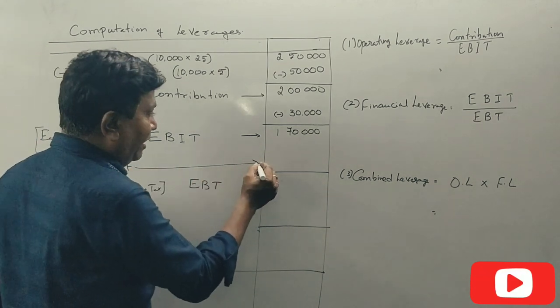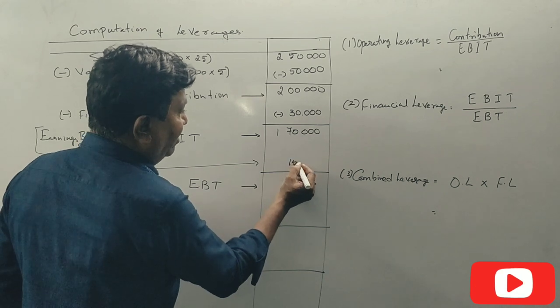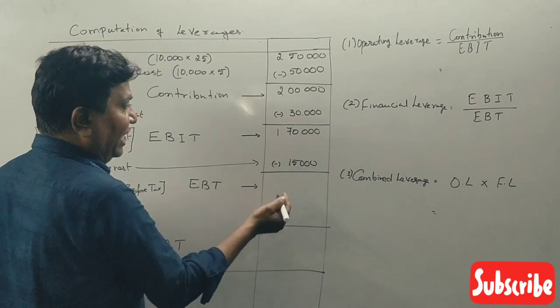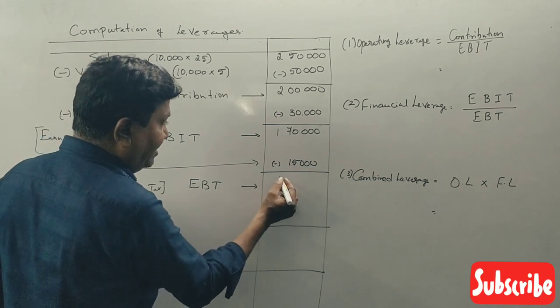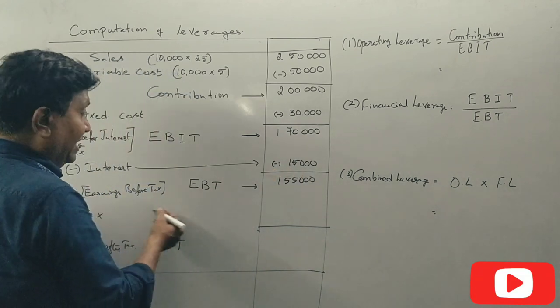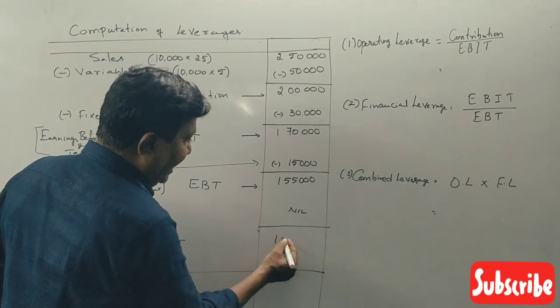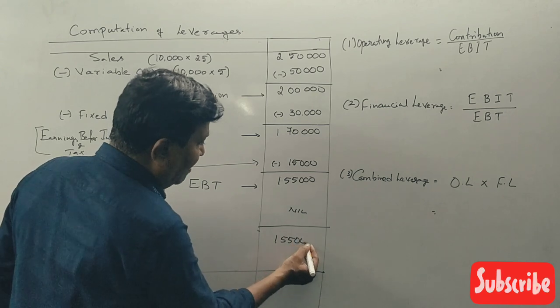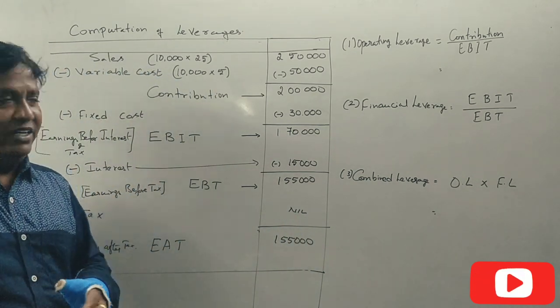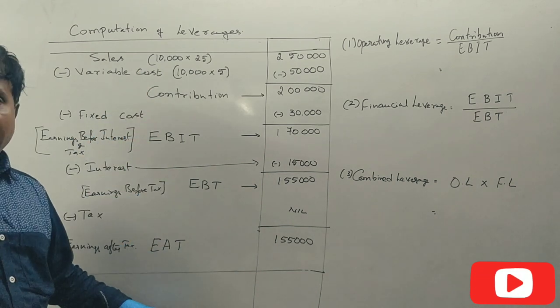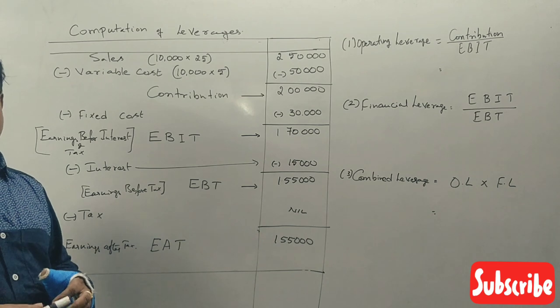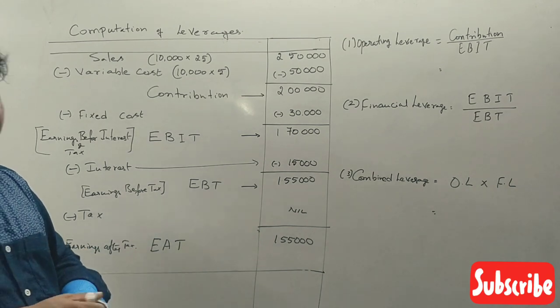Interest expense fifteen thousand. One lakh seventy thousand minus fifteen thousand equals one lakh fifty-five thousand, EBT. Tax gives EAT of one lakh fifty-five thousand. This is worth five to six marks.